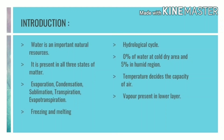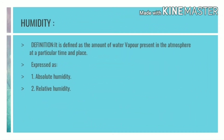Temperature plays a very important role in deciding the capacity of air to hold water vapor. Warm air can hold more water vapor, whereas cold air can hold a lesser amount. Water vapor is present in the lower layer of the troposphere, basically up to a height of two kilometers from sea level. Humidity is defined as the amount of water vapor present in the atmosphere at a particular time and place.